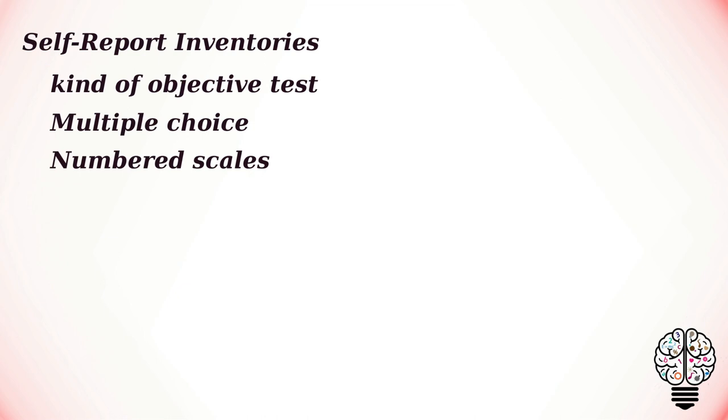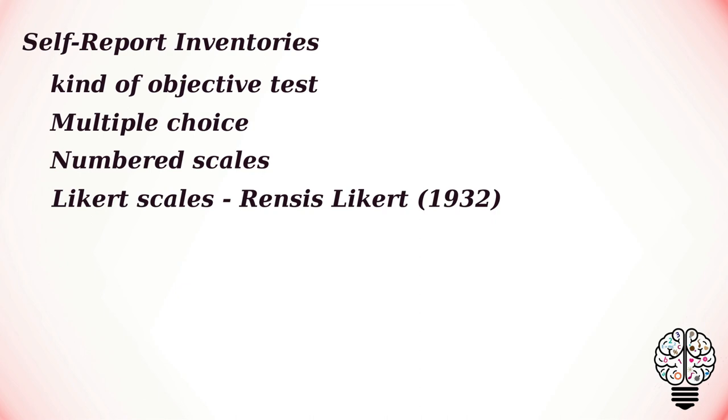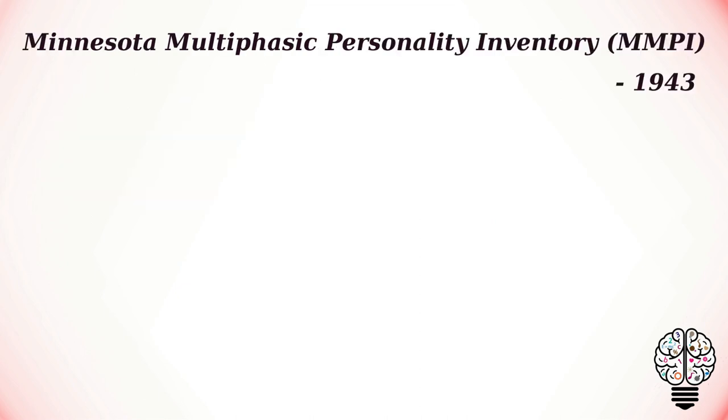Self-report inventories are a kind of objective test used to assess personality. They typically use multiple choice items or numbered scales which represent a range from one to five, where one is 'strongly disagree' and five is 'strongly agree.' These are often called Likert scales, named after their developer, Rensis Likert.